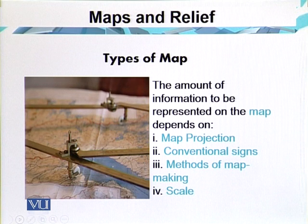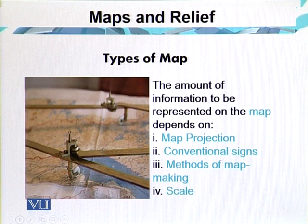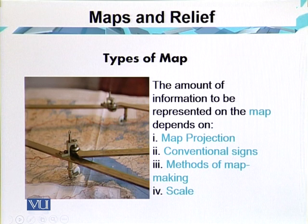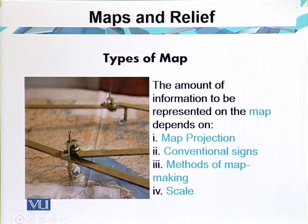The same applies to conventional signs. These are signs used not only for the physical environment but for the human environment as well. Weather symbols are used for weather maps. Conventional signs are also helpful for representing human features — for example, the city environment has its own symbols, such as the mosque and railway lines. These man-made features have their own symbols, which are called conventional signs.